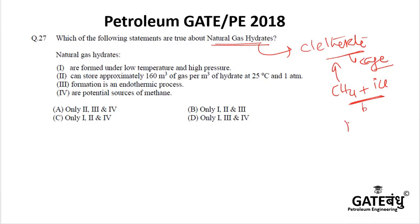To make methane stable in ice, conditions have to be low temperature and high pressure. Low temperature means very low entropy, and high pressure reduces the volume, confining the high-entropy gas toward the liquid side. This makes the cage-like structure stable. So natural gas hydrates are formed at low temperature and high pressure — that is the correct option.